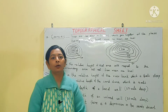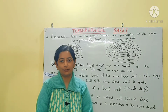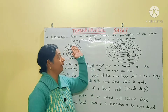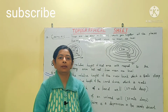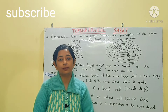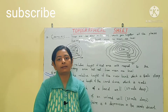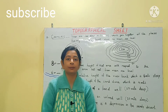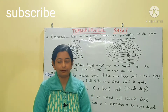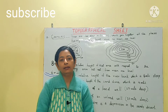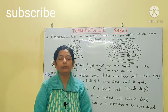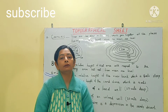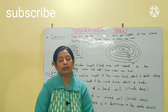Welcome to Success Show. Today we are going to study about topographical sheets, starting with conventional signs and symbols. Conventional signs and symbols are standard symbols shown in a topographical map, used to give a definite meaning to the different kinds of features present in a particular area or over a large area.